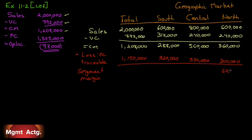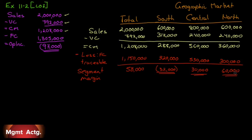The segment margins are: north $60,000, central $30,000, and south negative $32,000 — so the south is losing money. That's likely because variable costs are 52% of sales there, versus only 40% and 30% in the other two markets. Adding these up: $60,000 + $30,000 − $32,000 = $58,000. This is our geographic segment margin.